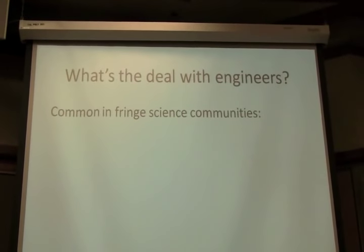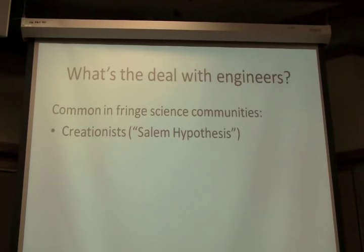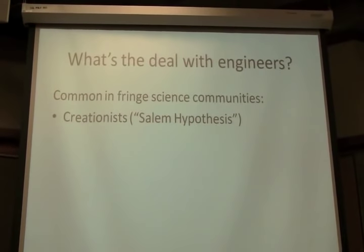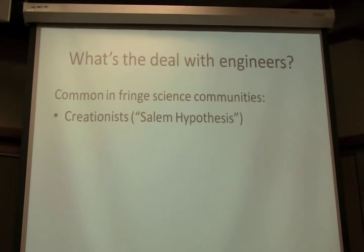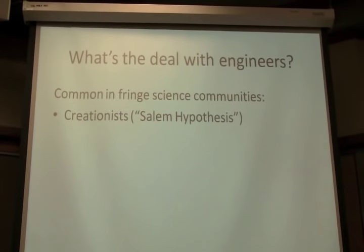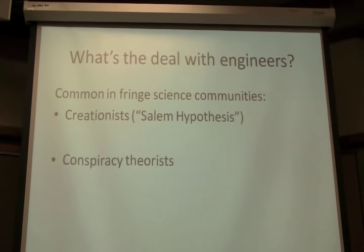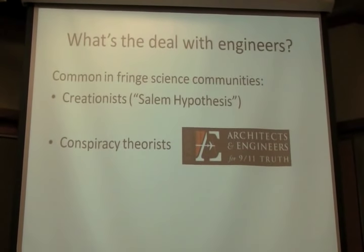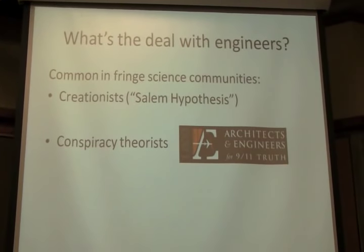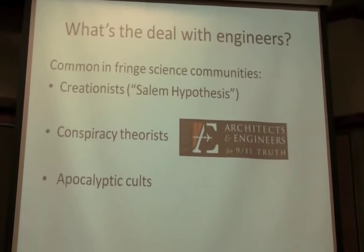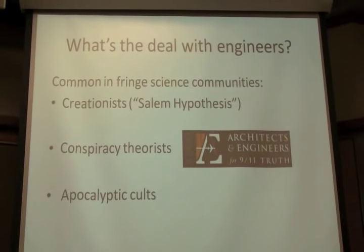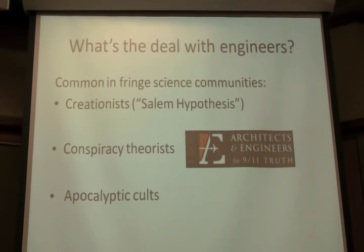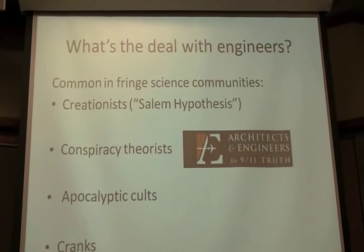And it's not just the box. They're common among all sorts of fringe science communities. For example, creationists. Back in the 90s, people on Usenet came up with something called the Salem Hypothesis, which is that if you're having a conversation with someone about evolution versus creation, and you're talking to a creationist, and they claim to have scientific expertise, they will invariably be an engineer. Also, conspiracy theorists. Many people in conspiracy theory communities are engineers, especially 9/11 Truth Group. The Architects and Engineers for 9/11 Truth has over 1,000 members that are engineers and architects. Apocalyptic cults. For example, the devotees of Harold Camping, the guy who predicted that the Earth would be destroyed last year. Many, many engineers among his devotees. And, of course, cranks.